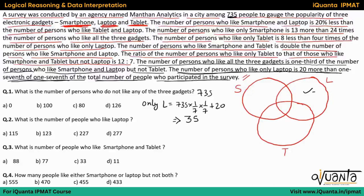So persons who like only laptop is 35. Now let us trace back through the set. The number of persons who like all three gadgets is one third of the number of persons who like smartphone and laptop but not tablet. So if smartphone-and-laptop-but-not-tablet is 3x, then the number of persons who like all three gadgets is one third of it, which is x.